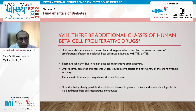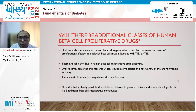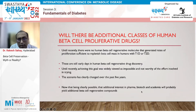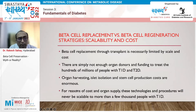Is it cost-effective? For transplants that cannot be offered to the entire population with type 1 or type 2 diabetes, this small molecule approach is likely to produce clinical benefits. Will there be additional classes of human beta cell proliferative drugs? Yes — with interest from pharma, biotech, and academia, more beta cell regenerative compounds are expected to come in the coming years.